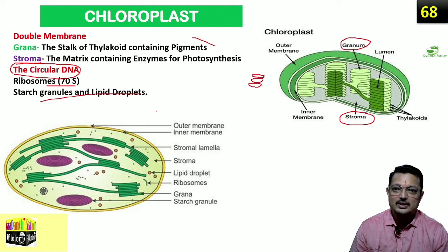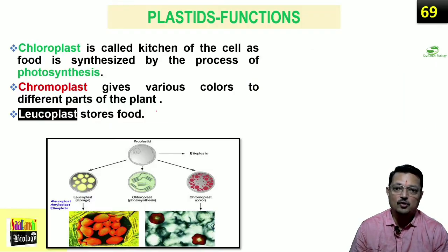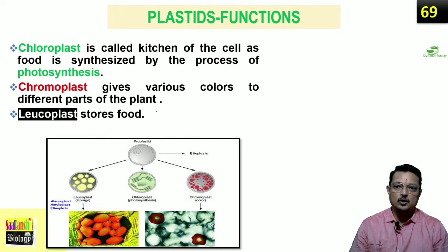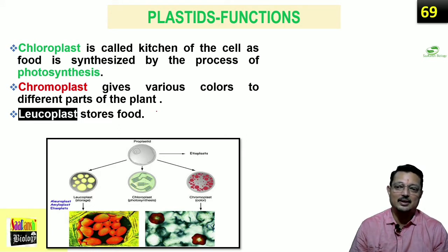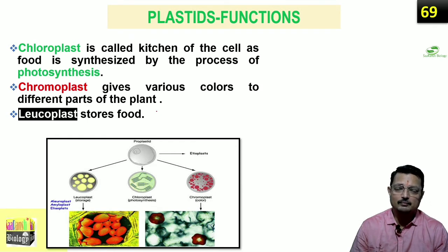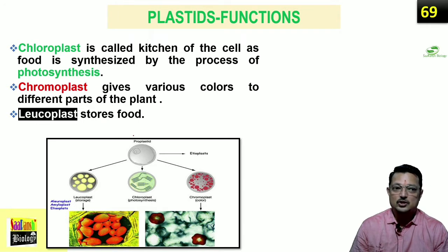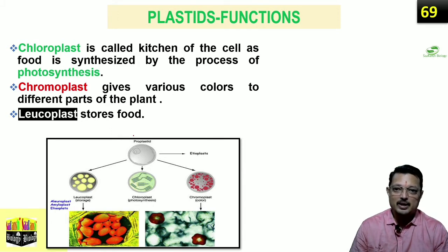You must pay special attention to chloroplast because it is very very important — it performs the function of photosynthesis. Grossly, plastids perform various functions: chloroplast can also be called the kitchen of the cell because it is actively involved in photosynthesis, converting solar energy into chemical energy. Chromoplasts provide color to various parts of the plant, and leucoplasts perform the storage function. Keep these three functions in mind.